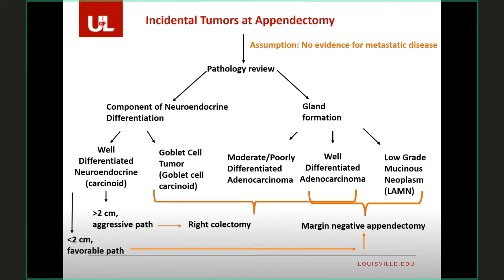Here is the workflow for localized tumors — assuming no metastatic disease. At incidental appendectomy, we look at the pathology and work from left to right: carcinoids and variants, then adenocarcinomas. The key decision is whether a margin-negative appendectomy is sufficient or a right hemicolectomy is needed. The reason to perform a right hemicolectomy is primarily adequate staging — resecting lymph nodes — in situations where the risk of lymph node metastases is high enough.